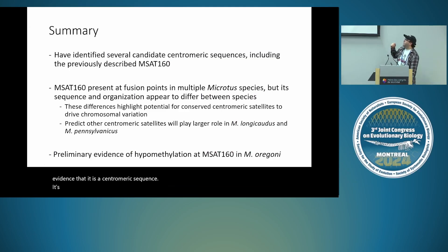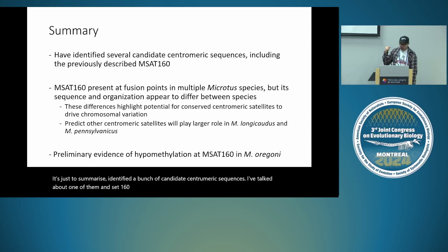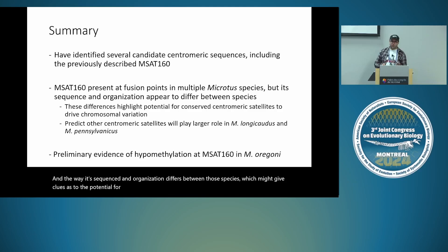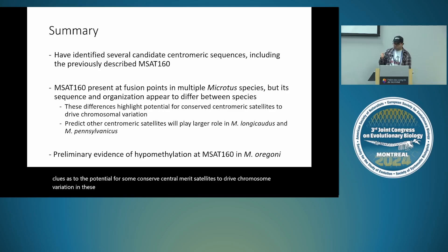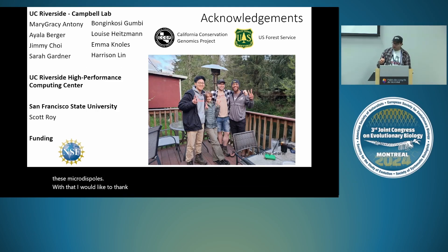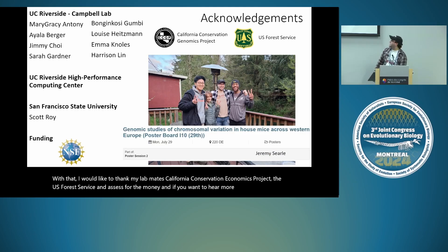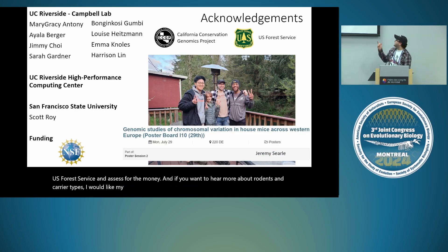To summarize: we identified a bunch of candidate centromeric sequences and have talked about one of them, MSAT160, today. It is present at fusion points in multiple Microtus species, and the way its sequence and organization differs between species may give clues as to the potential for conserved centromeric satellites to drive chromosome variation in these Microtus voles. Thanks to my lab mates, the California Conservation Genomics Project, the US Forest Service, and NSF for funding.